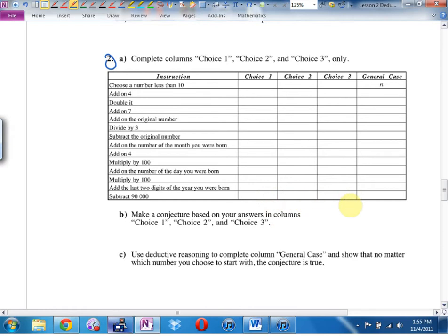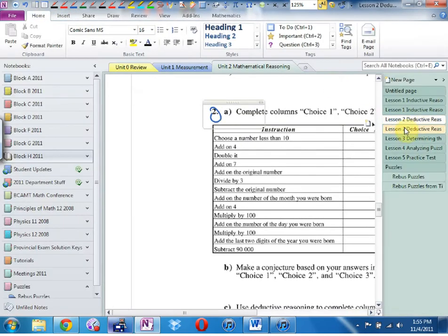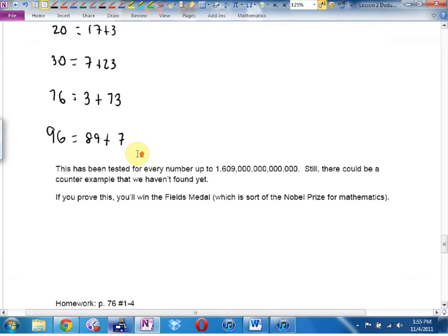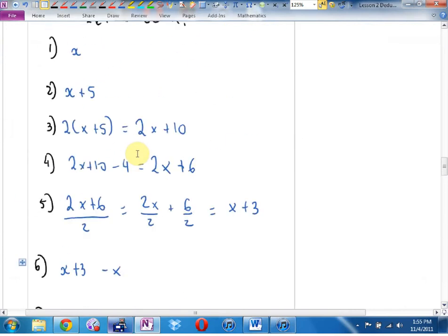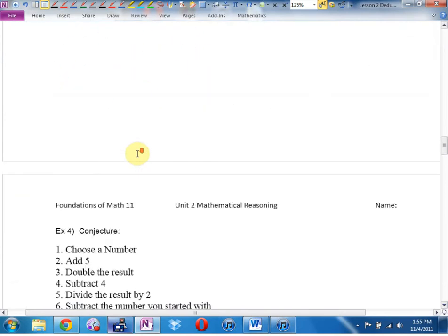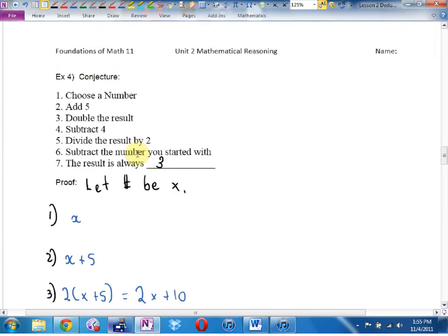So B says, make a conjecture based on your answers in columns one, two, and three with the three ones that you've tried. And then C says, use deductive reasoning to complete the column in the general case. So they're saying, let the number be M. And try following this one all the way through algebraically like we did last day for this one here. See if you can do it. We used X instead of M, but Matt, it's the same idea. Okay. So two all, good.